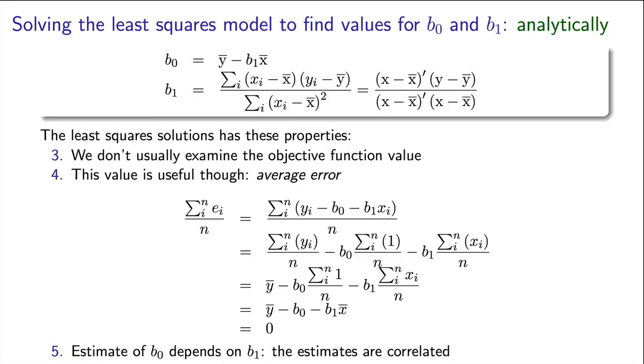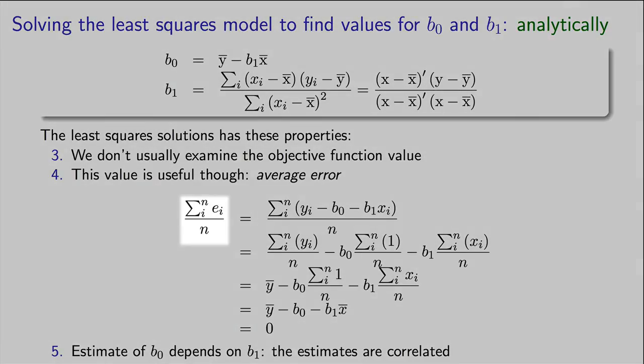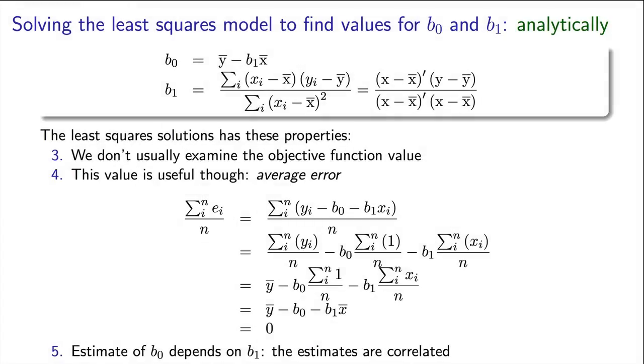But one number we are concerned about is the sum of the errors, or more specifically, the sum of the errors divided by n. In other words, what is the average error? The average error can be proved to be equal to zero.